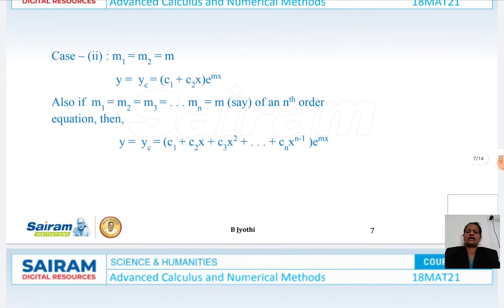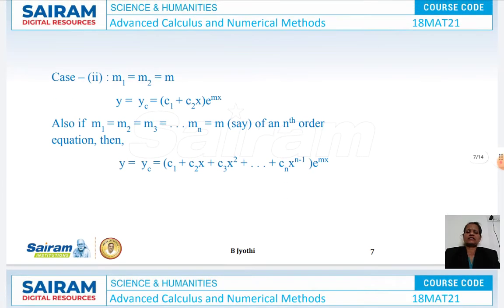Case 2: if it is a real and repeated root or coincident root, then yc = (c₁ + c₂x)e^(mx). If there are n equal roots, then we have the solution as (c₁ + c₂x + c₃x² + etc.)e^(mx).